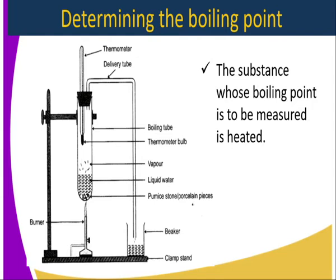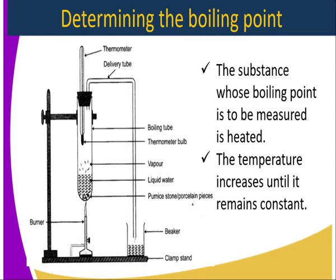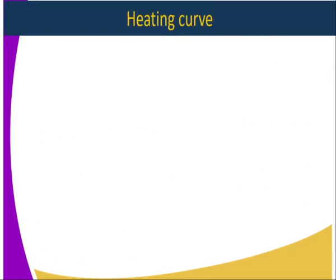The water vapor's temperature is determined using the thermometer. We have a delivery tube to direct the steam into a different area, ensuring that pressure is kept constant. The temperature increases until it remains constant — this constant temperature indicates a change of state from liquid to gas, which occurs only at the boiling point, when all the liquid changes its state to gas.